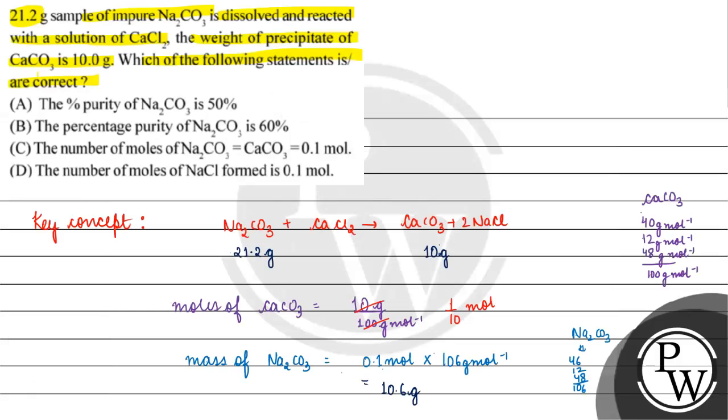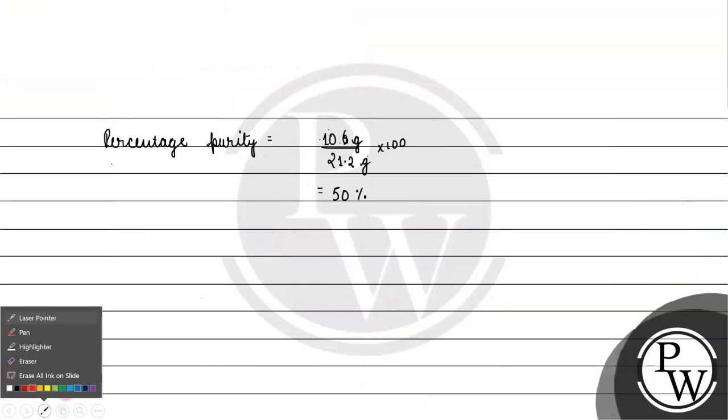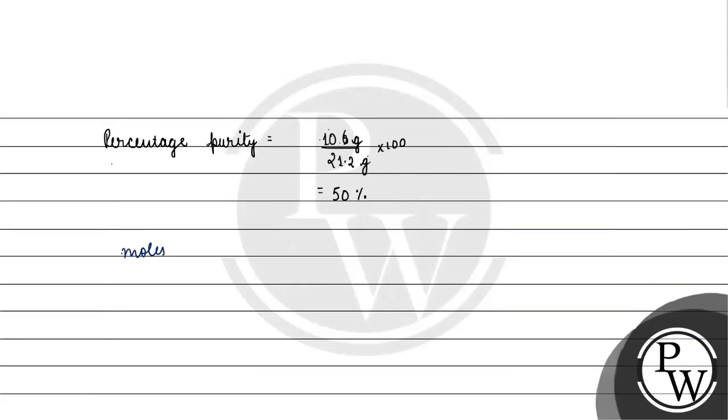Next, we are asked about the number of moles of NaCl. Moles of NaCl, if this is 0.1 mole, then moles of NaCl will be 2 into 0.1 mole. How much will it be? 0.2 mole will come.